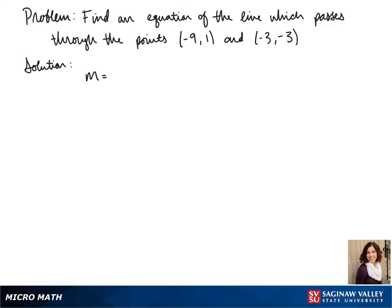We can find our slope by using our slope formula: negative 3 minus 1 over negative 3 minus negative 9. This gives us negative 4 over 6, which simplifies to negative 2 over 3.